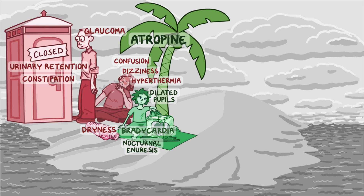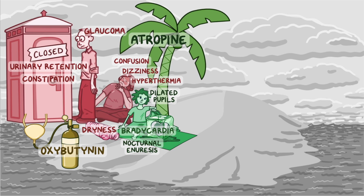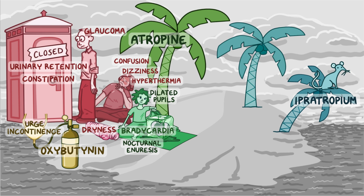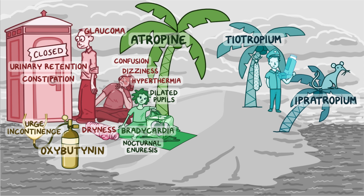For medications targeting specific organs: oxybutynin is represented by an oxygen tank with a large button on it, connected to a hose inflating a bladder like a balloon — representing its use for urge incontinence. A short palm tree with a rat on top represents the short-acting ipratropium, and a tall palm tree with ties on it represents tiotropium. A cop with asthma is sitting between the trees using his inhaler, to help remember these drugs treat COPD and asthma.